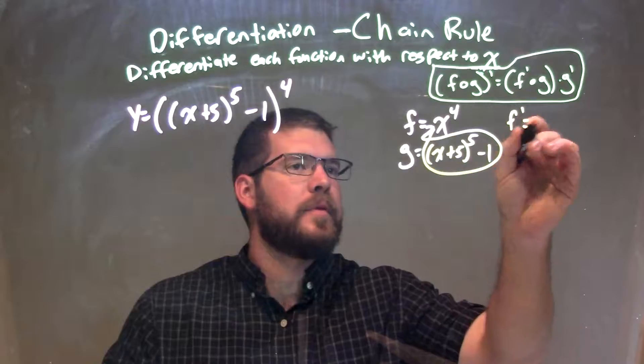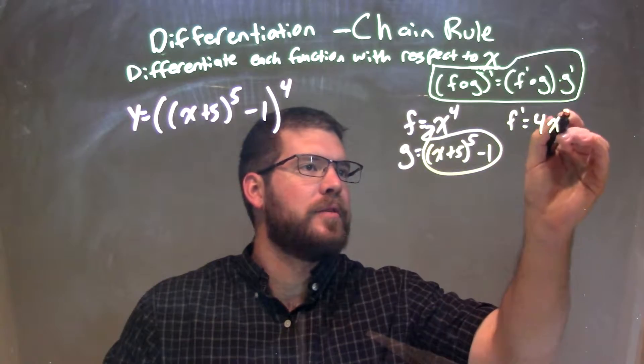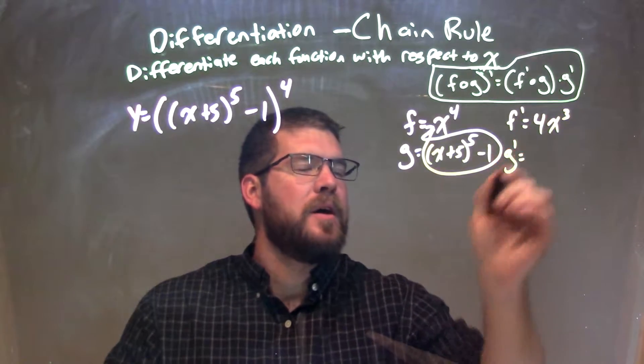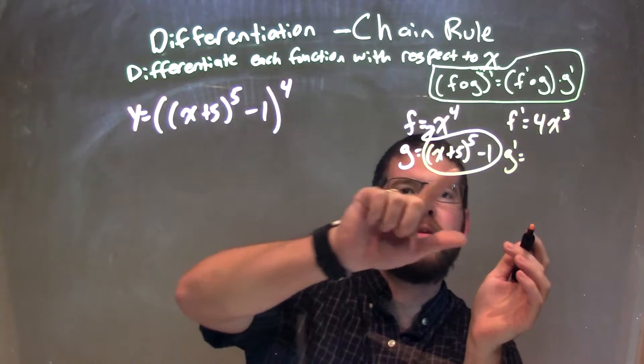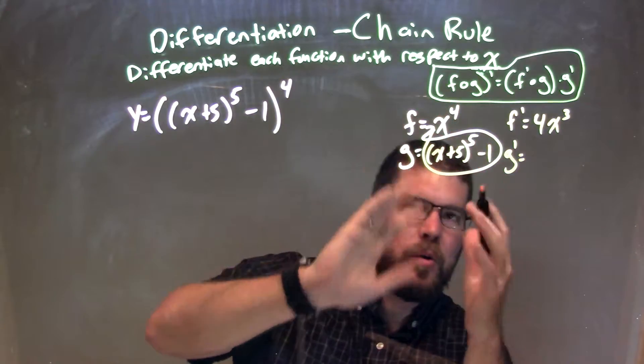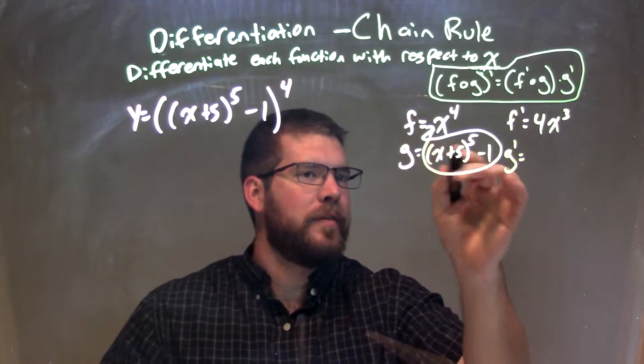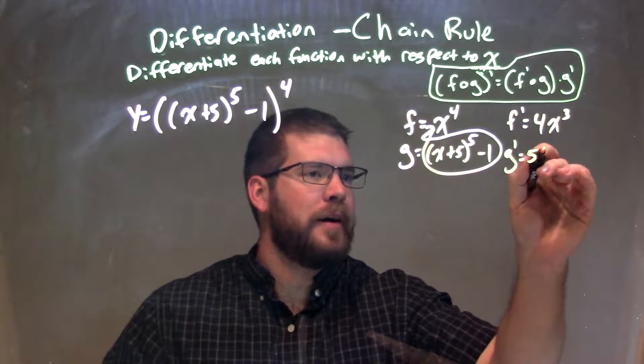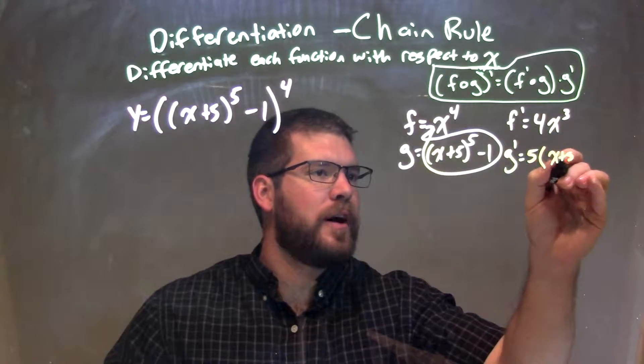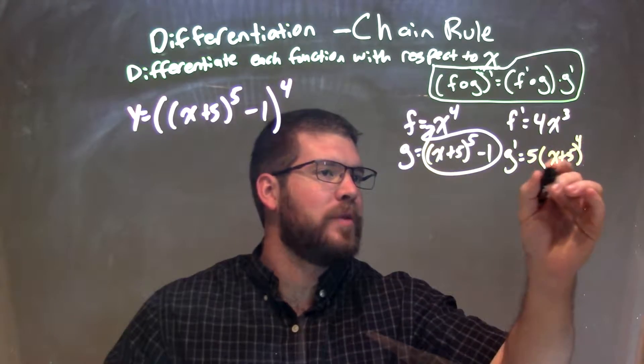So f prime, pretty easy, is 4x to the 3rd. But g prime, sometimes when you do the double one, I won't actually recreate a whole other chain rule thing. I'll just kind of do it all by step here. We take the derivative of this, that power comes down 5 times x plus 5 to the 4th power times the derivative of the inside.